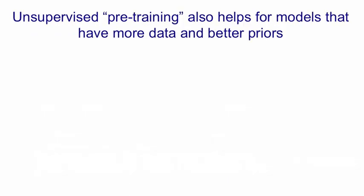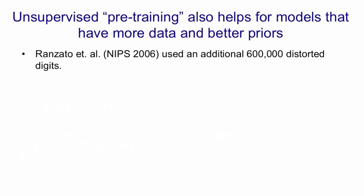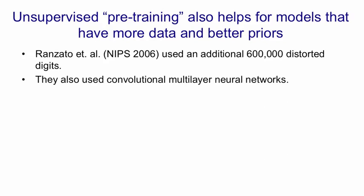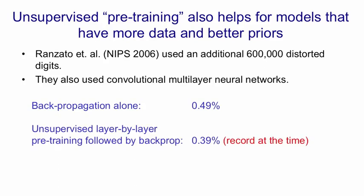Mark Aurelia-Ranzato, working in Yann LeCun's group, also showed using a slightly different pre-training method that pre-training helps for models that have more data and better priors. They used an additional 60,000 distorted digit images, so they had a lot more training data. They also used a convolutional multilayer neural network, and Yann's group is the best at tuning those. With backpropagation alone they managed to get down to 0.49%. When they did the unsupervised layer-by-layer pre-training followed by backpropagation, they got down to 0.39%, which at the time was a record.